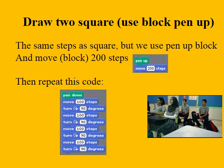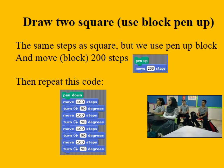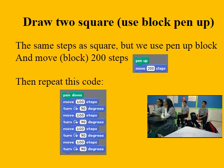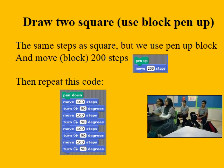To draw two squares, we use the pen up block. We move 200 steps, then repeat this code again. So we have two squares drawn at the same time.